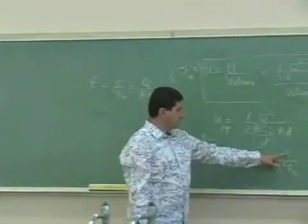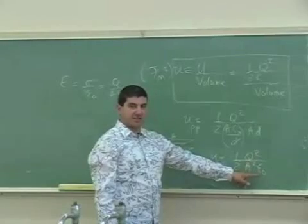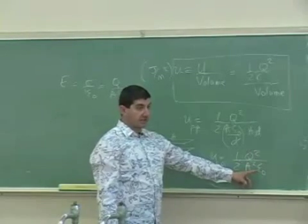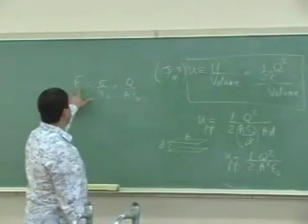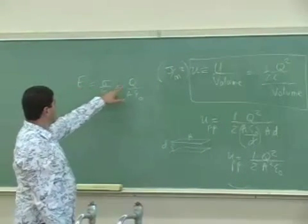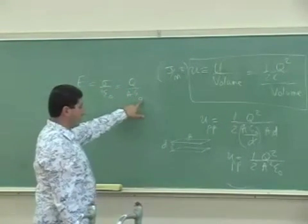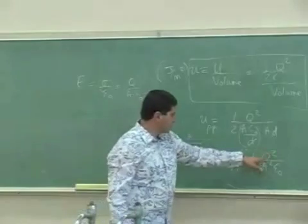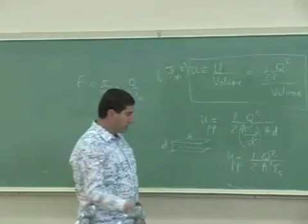So I notice that this one, Q squared over A squared ε₀, looks like the electric field, Q over A ε₀, except this is square and this is square.